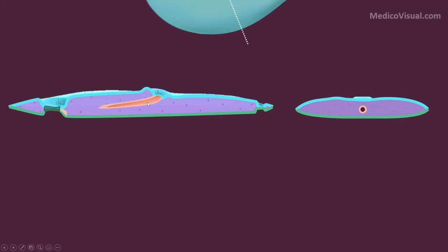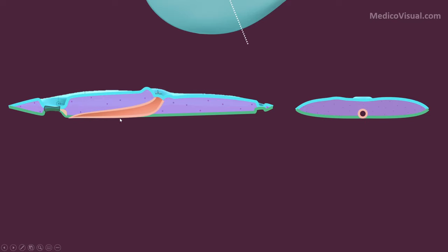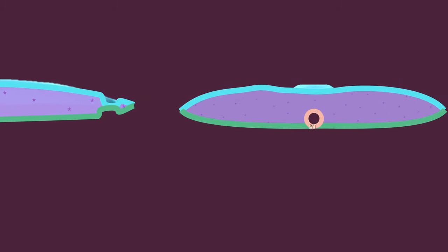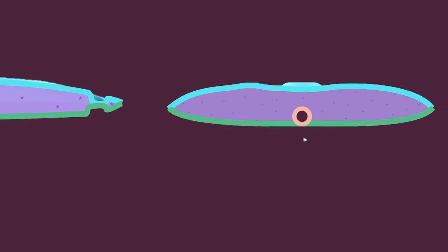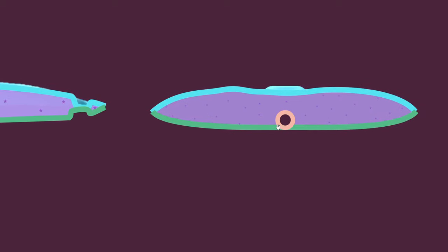This notochordal process with its notochordal canal continues to grow until it reaches the pre-cordal plate, then it further grows and intercalates into the underlying embryonic endoderm. In this diagram you can also see that the notochordal process with the notochordal canal became intercalated into the embryonic endoderm, slightly displacing it laterally in this part.